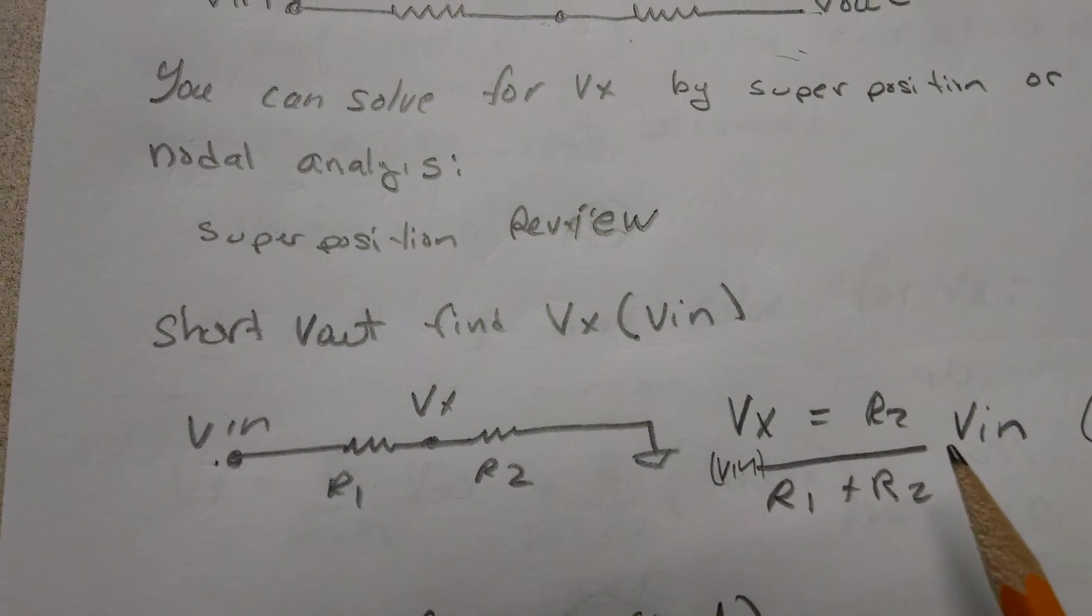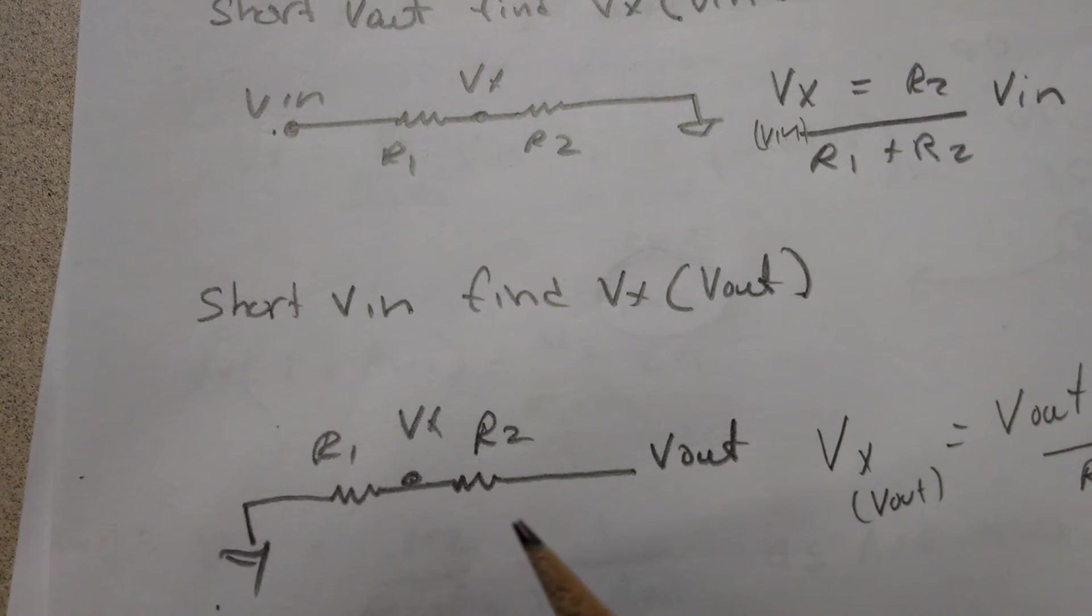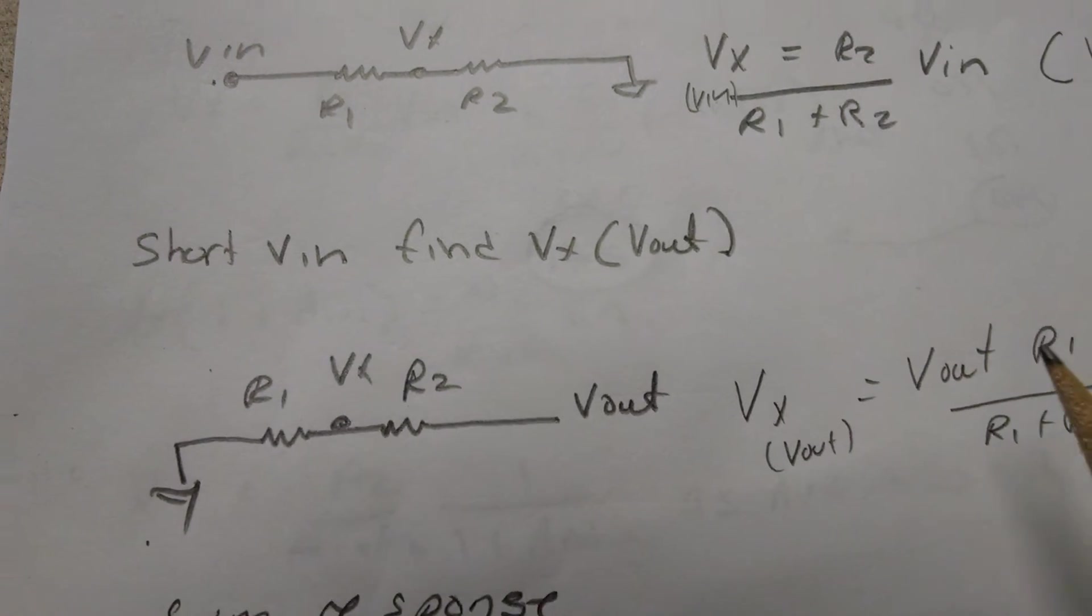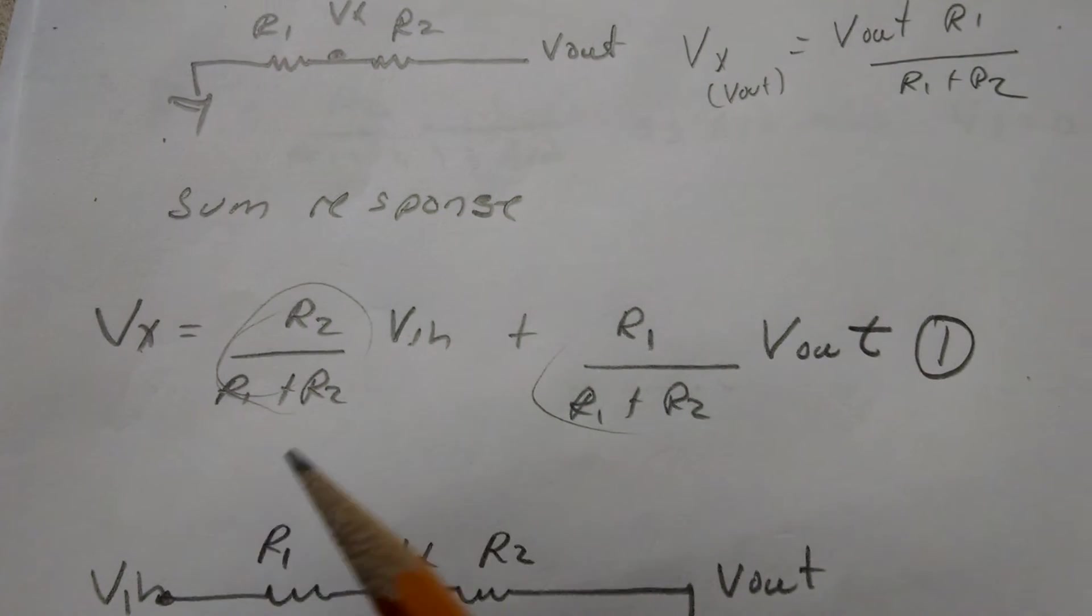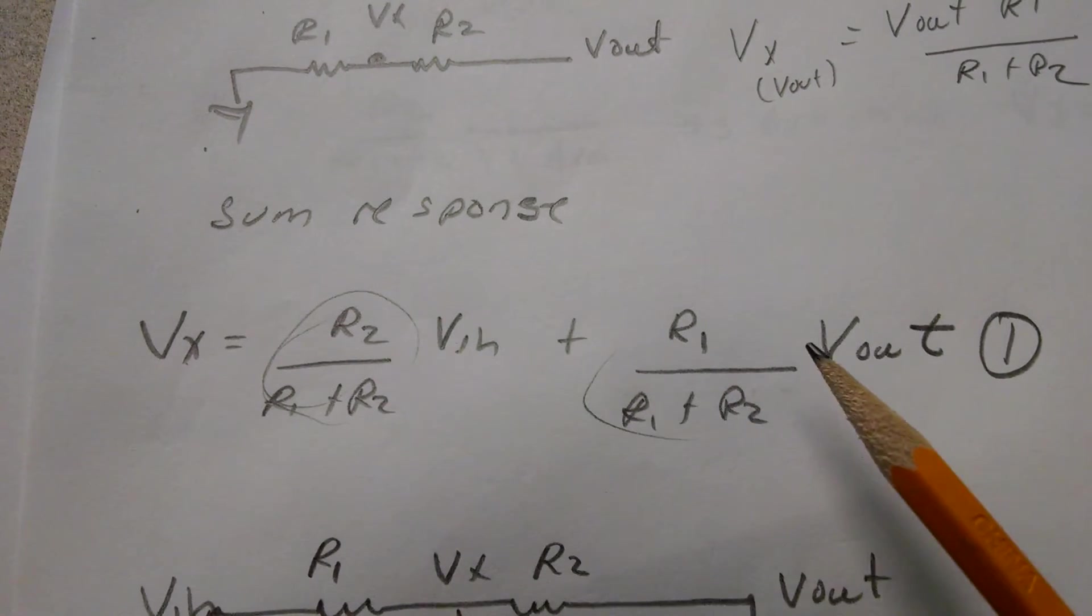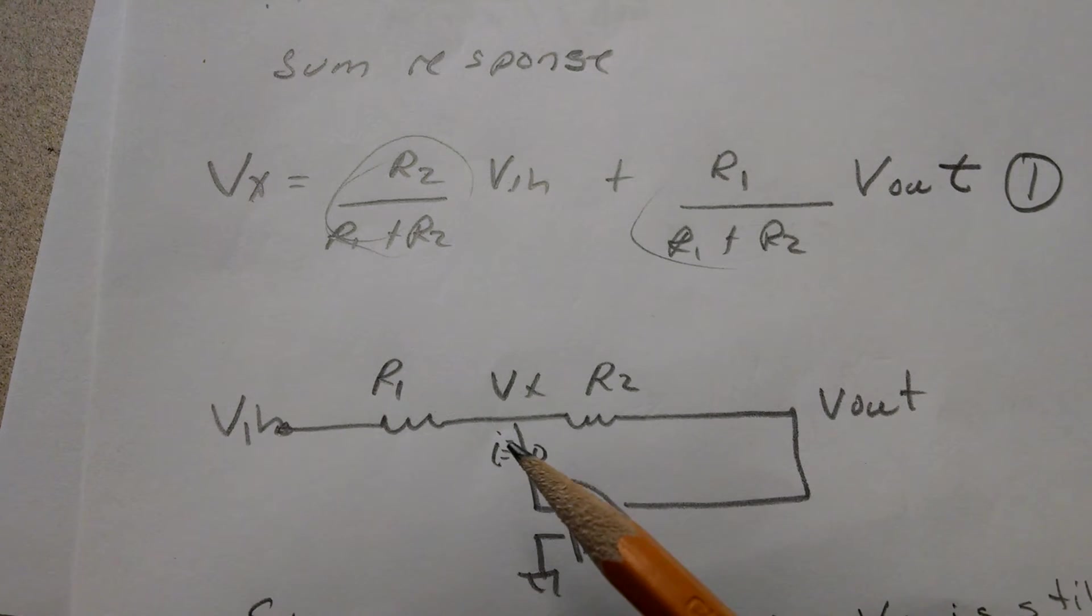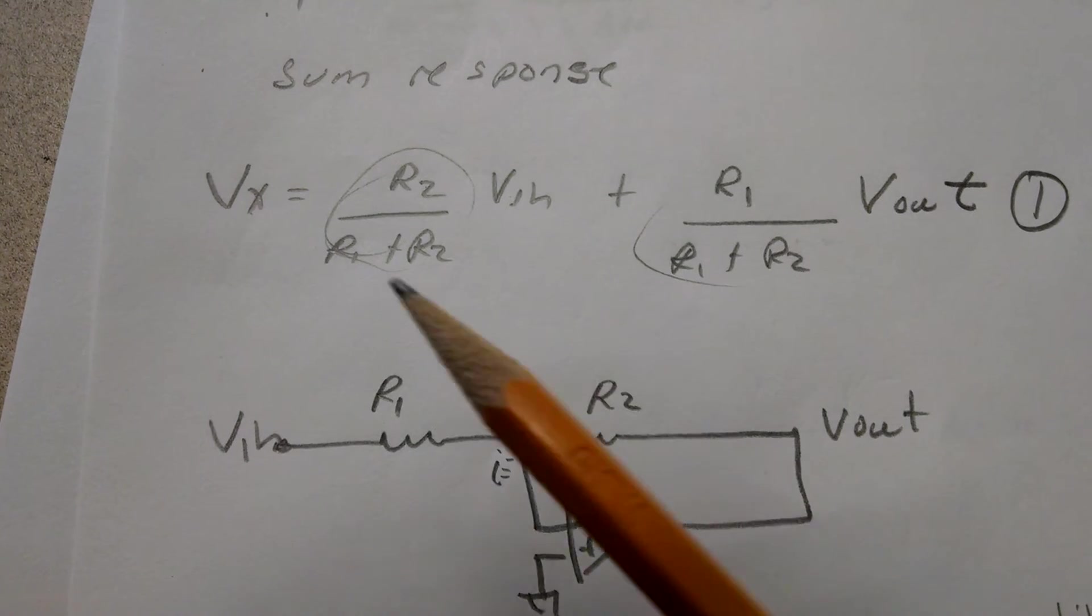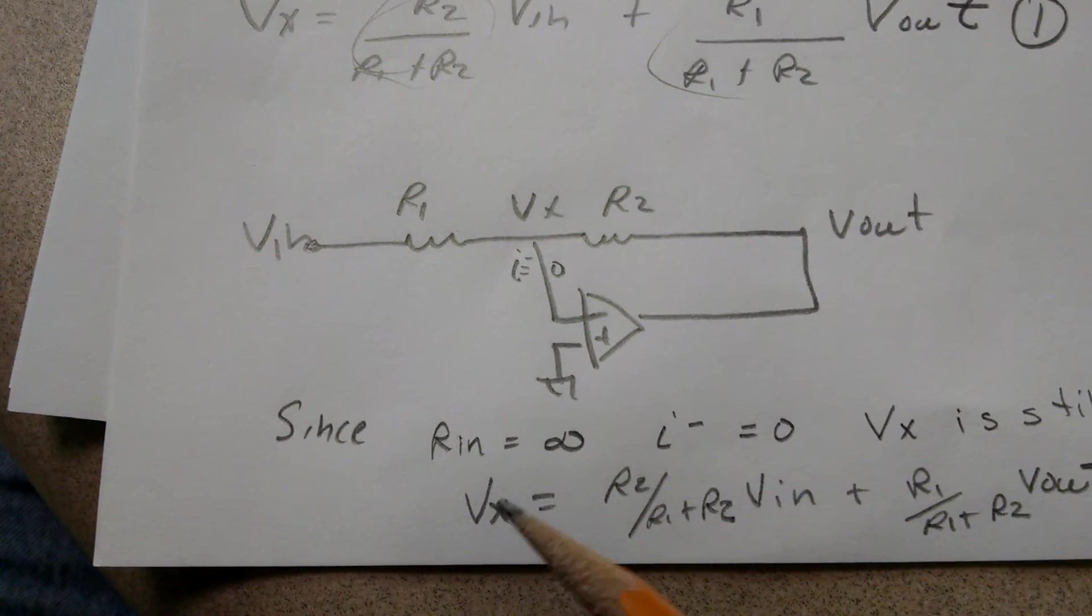I'll short Vout. Vx is just a voltage division of R1 and R2. I sum the responses and now I have that equation. Put it into the op-amp. I- is still zero, so that Vx relationship we solved for up here is still true.